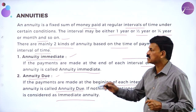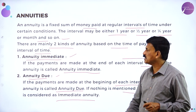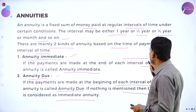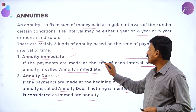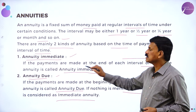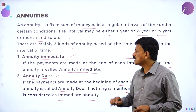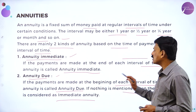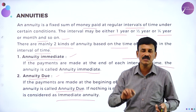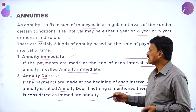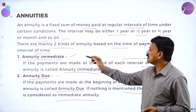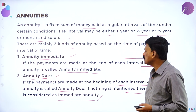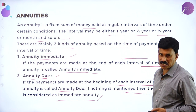There are two types of annuities: the first is annuity immediate — if payments are made at the end of each interval of time. If payments are made at the beginning of each interval of time, then such annuities are called annuity immediate and annuity due. If nothing is mentioned, it is considered as annuity immediate.